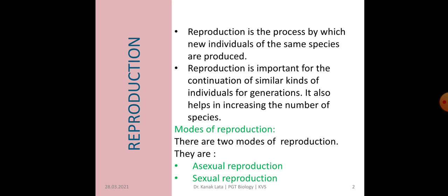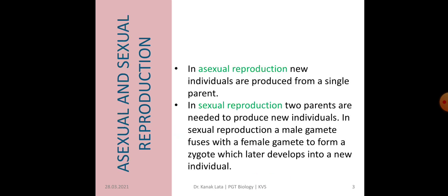Now let us see what are the different modes of reproduction. There are two different modes of reproduction: Asexual Reproduction and Sexual Reproduction. So let us discuss what is Asexual and Sexual Reproduction.